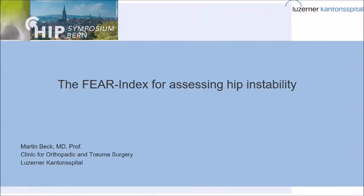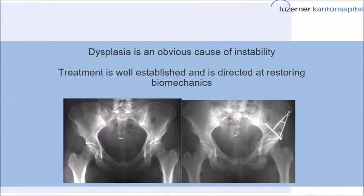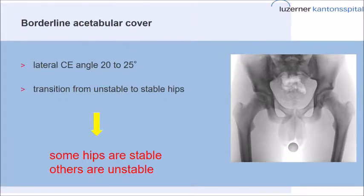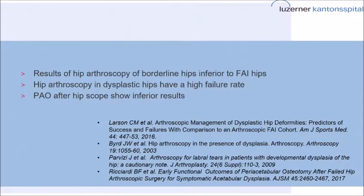As Moritz has introduced, hip instability is quite an important factor which we still don't really understand. While it's clear that dysplasia is an obvious cause of instability and has to be treated with a periacetabular osteotomy, the problem of the borderline hips is less clear. We have a group of hips that are between stable and dysplastic, forming a transition group from unstable to stable hips. Some may be stable, some are maybe unstable, and the problem is we don't know which is what.